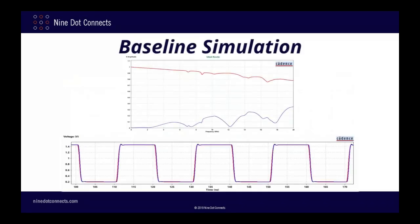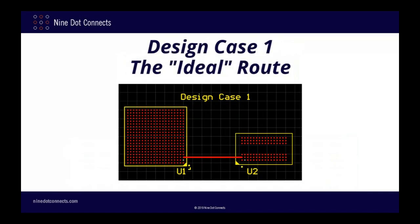At this point, we now have an ideal routing design and simulation results in both the frequency and time domains. As I proceed to implement the remaining layout cases, I will compare their simulation results with these baseline simulations in order to demonstrate any new signal integrity effects caused by the new routing paradigms. My first design case may have been ideal, but it wasn't very realistic — we cannot route our boards with perfectly straight traces and therefore must have bends somewhere. But just how much do these bends affect the integrity of the signals?